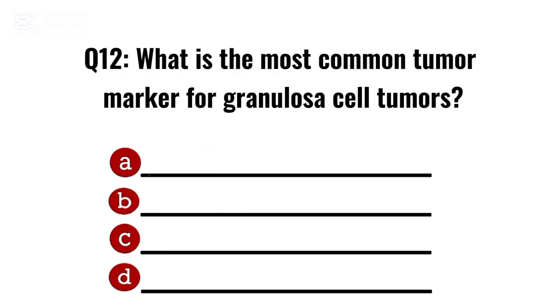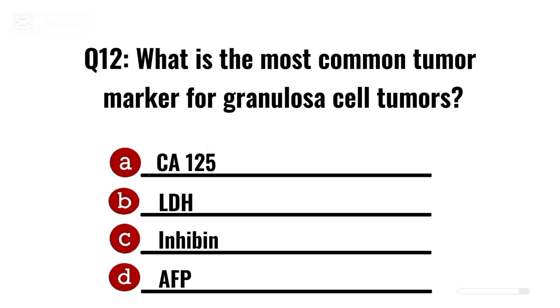Question 12. What is the most common tumour marker for granulosa cell tumours? Correct option C: Inhibin.